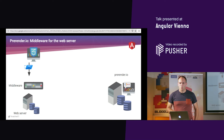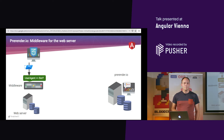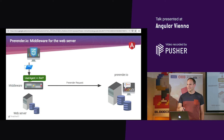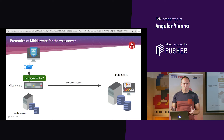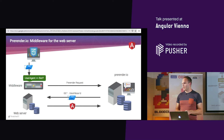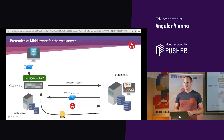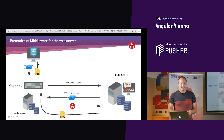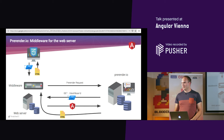Prerender.io works as follows: when a request comes in, middleware on the web server checks whether the application is being accessed by a bot, crawler, or social media site preview. If so, the request is forwarded to the prerender.io web service, which has a real headless browser. That browser makes a request to our application, gets the bundles, renders the application, and sends back the resulting HTML. The client gets the exact HTML with real content if it's a bot.